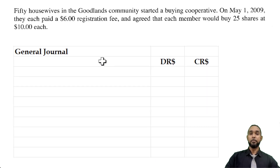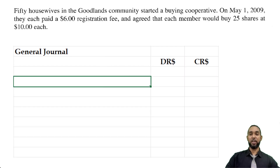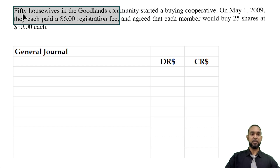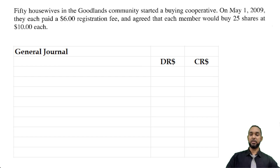I'm going to pull up my general journal. With general journal entries, the debit entries come first, followed by the credit entries, which are indented relative to the debit entries. The first entry we're going to put is the registration fees. We have 50 housewives paying $6 each — 50 by 6 is $300. So that's going to go into cash. Cash is an asset; to record an increase in an asset, you have to debit the asset account. So you're going to see Cash, $300, under the debit column.